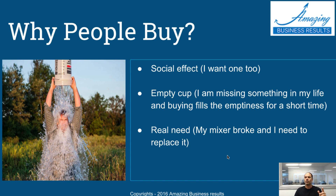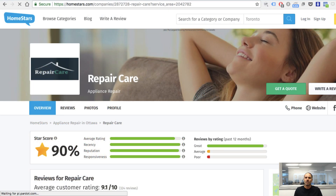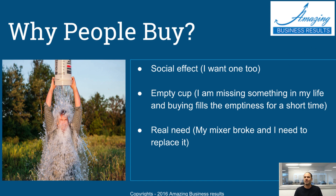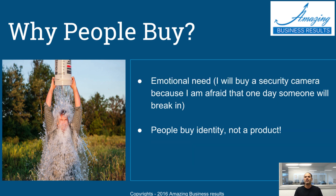The third thing is a real need — for example, my mixer is broken and I need to replace it. Surprisingly, of all five ways people actually buy things, real need is the lowest one. Most people don't buy because something is broken. In my appliance repair company we always use real need because people only fix appliances when they must — but in most businesses I've worked with, there's no need to use real need as the primary motivator.